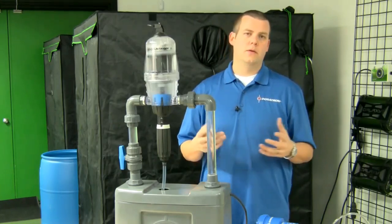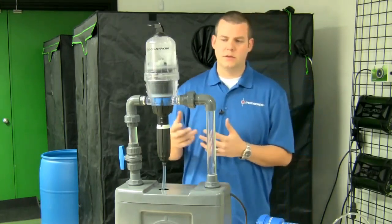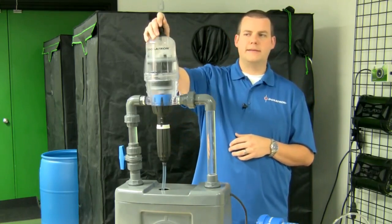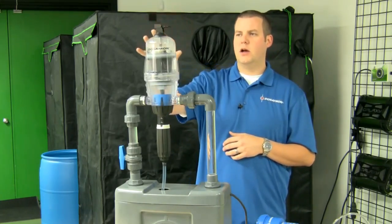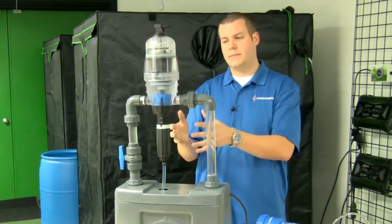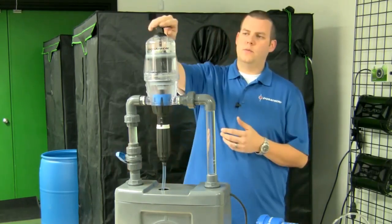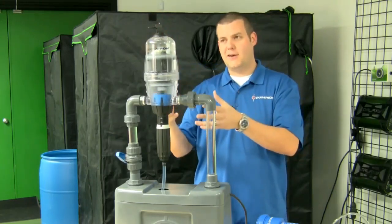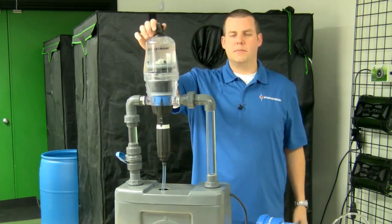We also have something in the Dosatron line that allows us a little bit more flexibility, and that is the ability to have what we call a bypass. When this bypass is turned on, it stops the piston from moving up and down, which therefore stops the unit from injecting. If we turn that bypass back off, injection resumes when necessary.